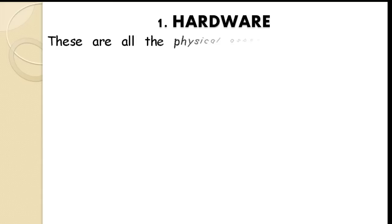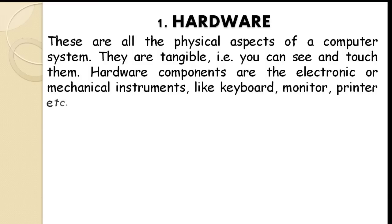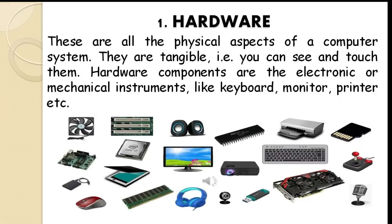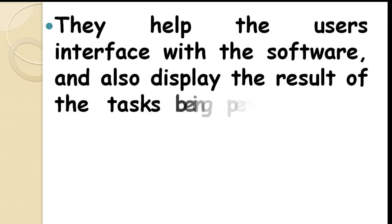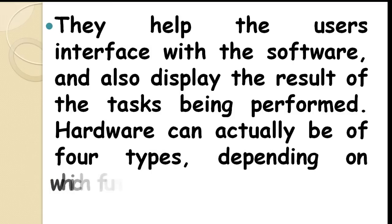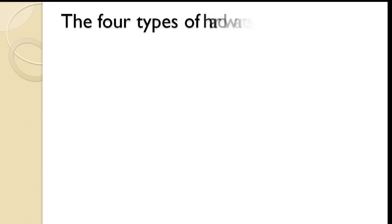Hardware — these are all the physical aspects of a computer system. They are tangible, that is, you can see and touch them. Hardware components are the electronic or mechanical instruments, like keyboard, monitor, and printer. What you see on the screen now are clear and precise examples of computer hardwares. The computer hardware helps the user interface with the software and also displays the result of the tasks being performed. Hardware can actually be of 4 types, depending on which function they perform.